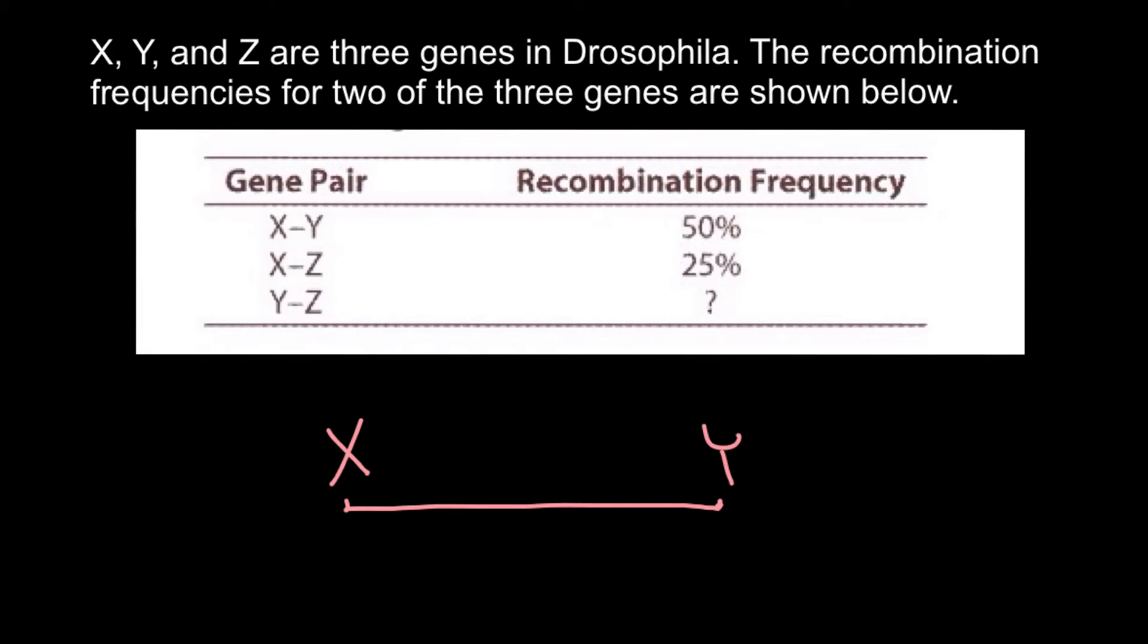Whether we can put it here, so here we have 50% and here we may have another 25% and here would be gene Z. Or we can plot it here, gene Z can be here.